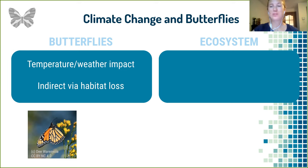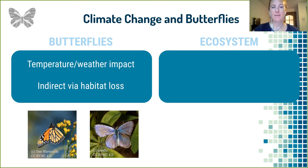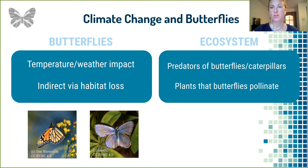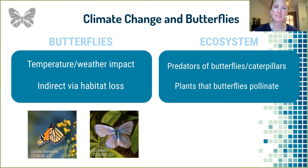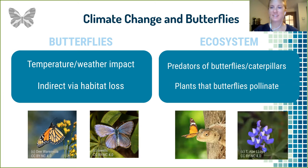What could we do if we had exact numbers of how monarchs are impacted by climate change? There are also smaller species that are less symbolic but very important to local ecosystems. When butterfly numbers go down, predators are also impacted because they don't have the butterflies they usually eat. The plants that butterflies pollinate are also affected — monarchs pollinate local wildflowers, flowers, and vegetables. There are different species of reptiles and birds that are part of the butterfly chain.